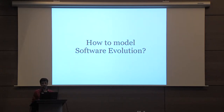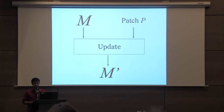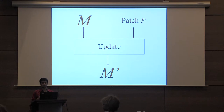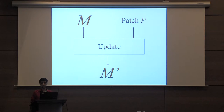In this work, we deal with software evolution. We model the software as Turing machines. There is a machine M, and there is an update algorithm that takes this Turing machine M along with the patch B and produces a new machine M prime. The size of M prime could be unrelated to the size of M — it could be much larger or much smaller.